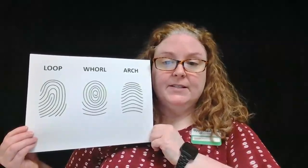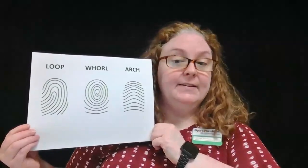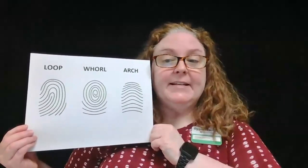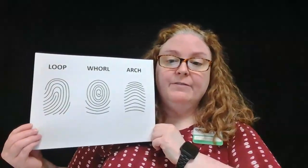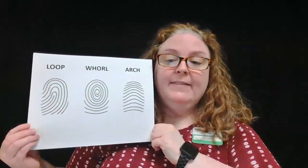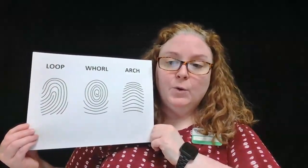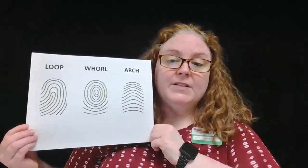To make latent fingerprints visible, you have to find a way to detect one of these substances present in the invisible fingerprint. The easiest method is called dusting, in which you use a very fine powder that can stick to the oil in the fingerprint. Once the fingerprint becomes visible, you can lift it from the surface with clear tape and transfer it to another surface to take it to the laboratory for further analysis.